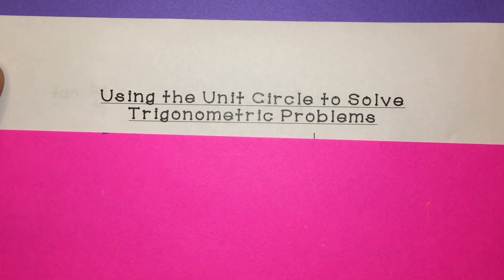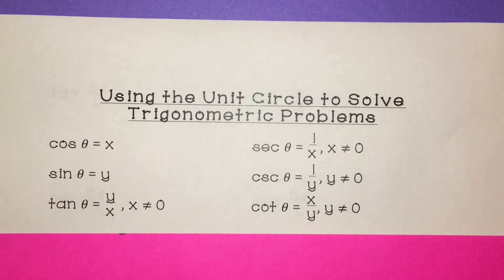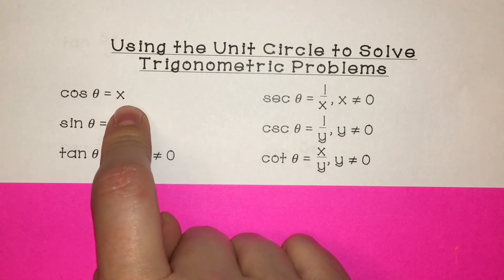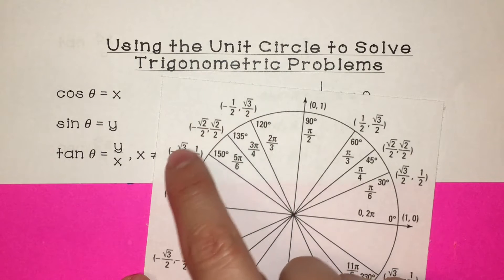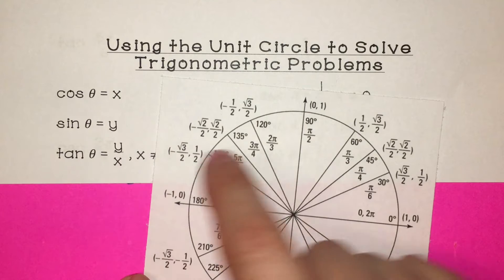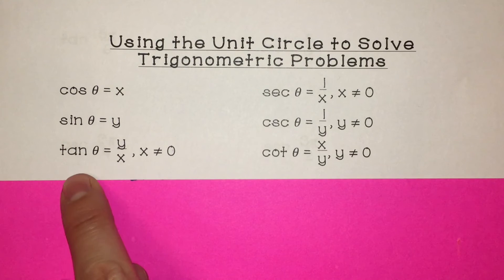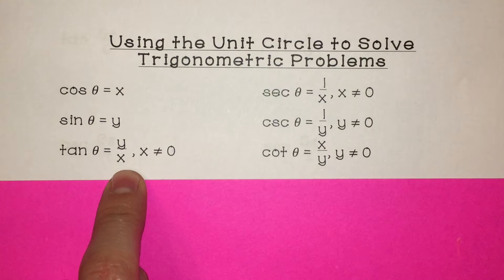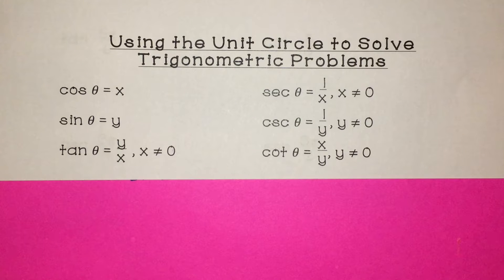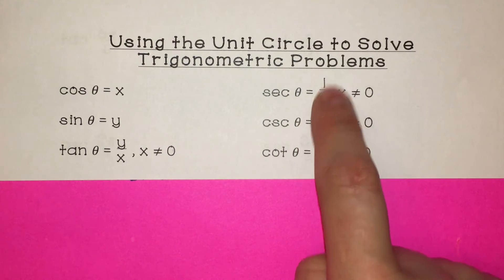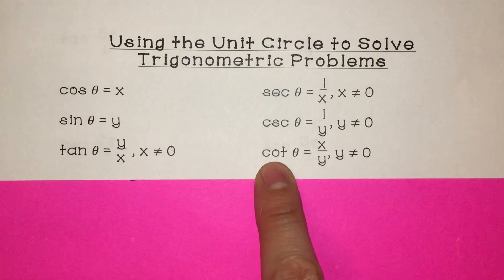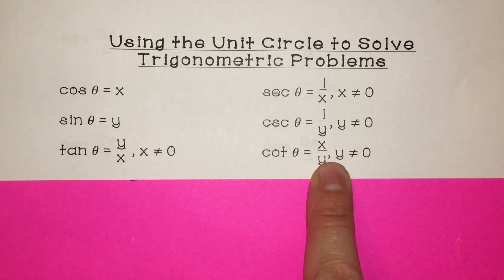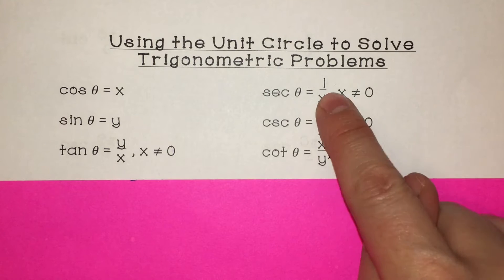This video is on using the unit circle to solve trigonometric problems. Cosine of theta equals the x value on the unit circle, so cosine always involves the x coordinate. Sine of theta involves the y coordinate. Tangent of theta is the y coordinate over the x coordinate — x cannot be zero because you can't have zero in the denominator; if the denominator is zero, it's undefined. Secant of theta is one over the x value. Cosecant of theta is one over the y value. Cotangent of theta is x over y, so remember the denominator cannot equal zero.